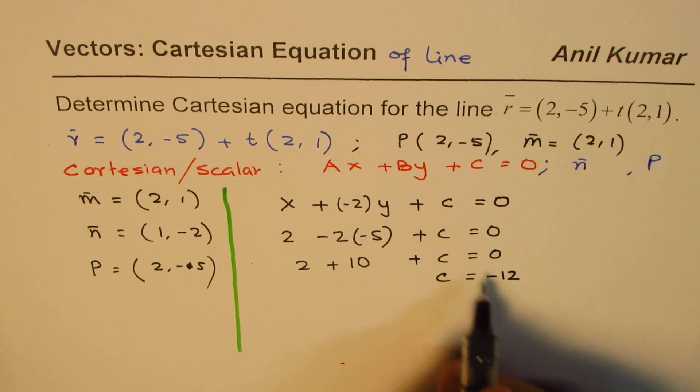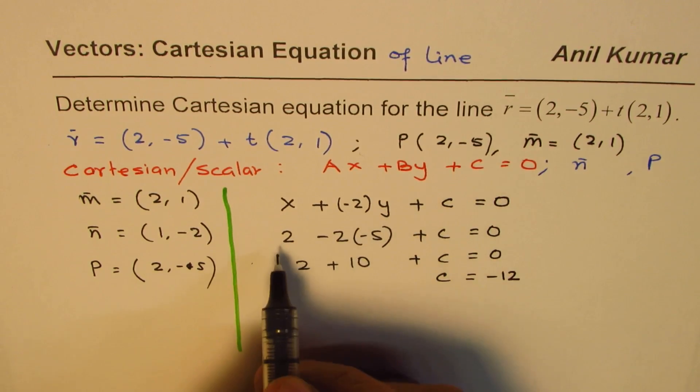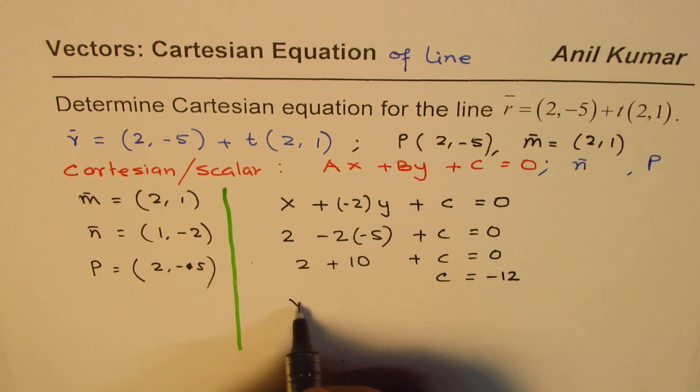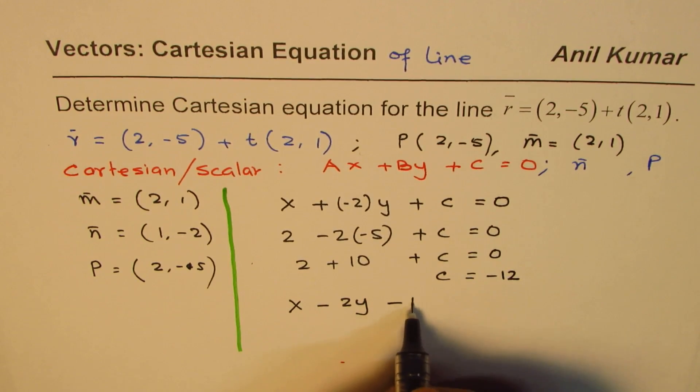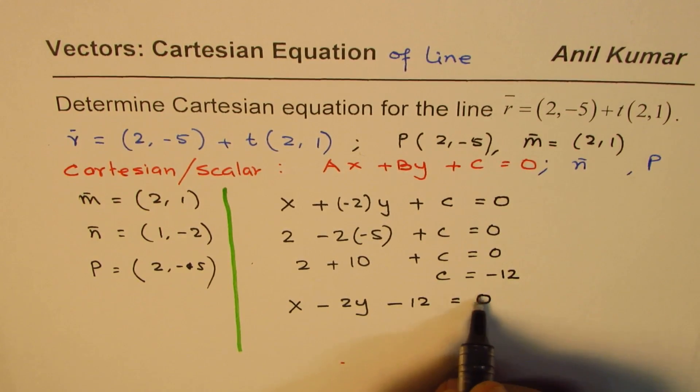Is it okay? So C is -12. Now we can write down the scalar equation, which for us is x - 2y - 12 = 0. Do you see that?